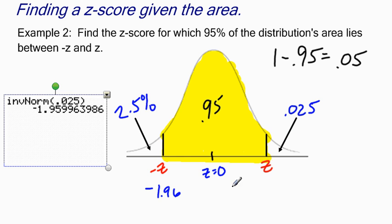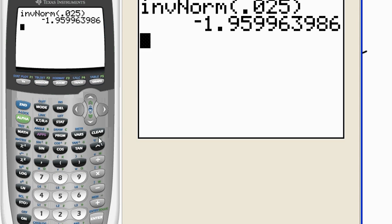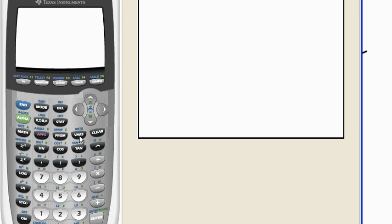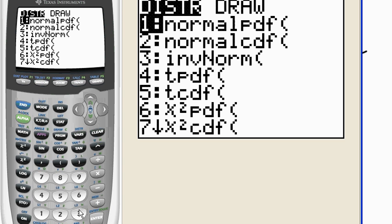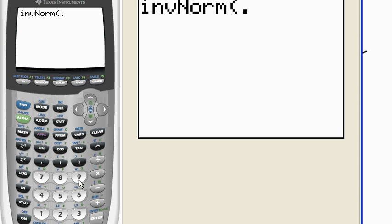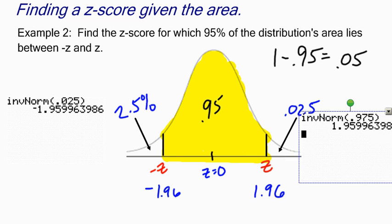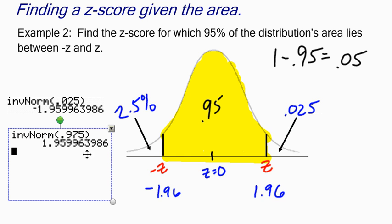Because this is symmetric, the z-score over here is positive 1.96. But to test it out, if I want the z-score that cuts off the bottom—0.95 plus 2.5% equals 97.5%—I'll go second, vars, number 3, inverse norm for 0.975. When I hit enter, I get the positive z-score I'm looking for: 1.96.